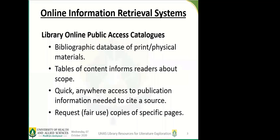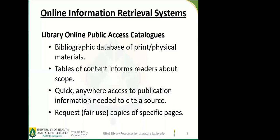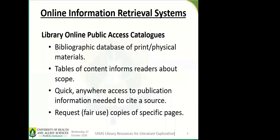So what is our library online public access catalog, or the OPAC? The OPAC is a bibliographic database of print or physical materials. What we mean by bibliographic database is that the online catalog does not contain the full text or the actual books that are in the library. Rather, it contains a description or metadata — publication details. For example, the author's name, the title of the book, edition, year of publication, publisher, and sometimes the contents of that particular book, the table of contents or a brief summary.